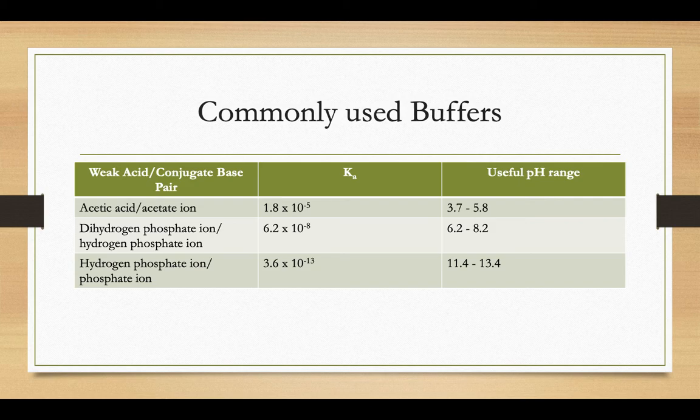So why is it that the acetic acid and acetate ion buffer is useful in the 3.7 to 5.8 range? And why is it that that second one is useful in the 6.2 to 8.2 range? Why?